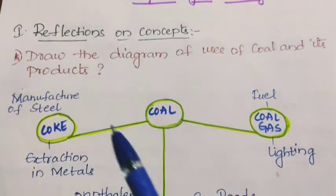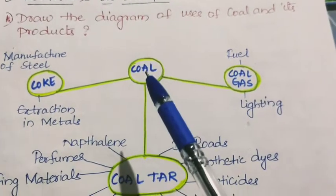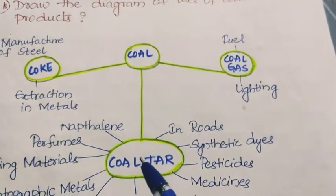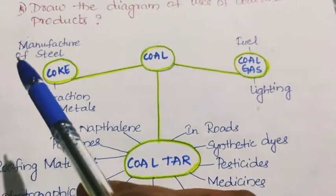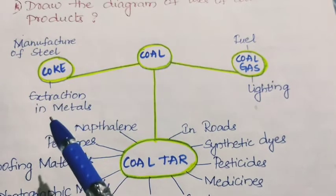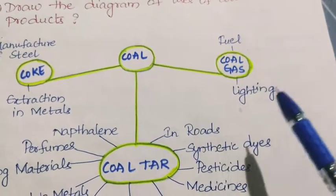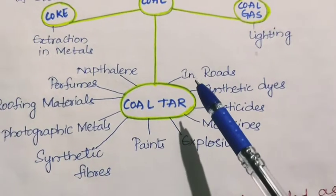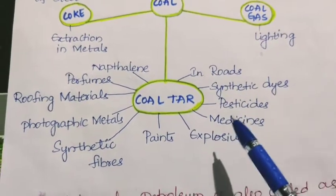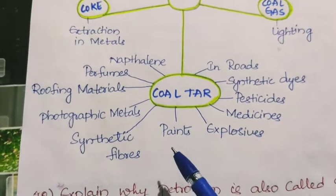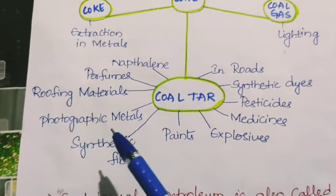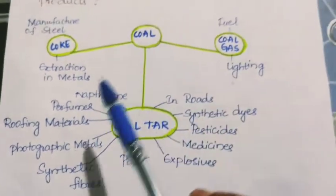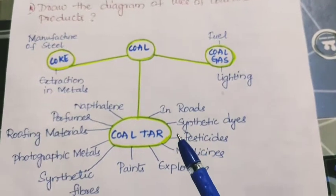Coal and its products: coal occurs as coke, coal gas, and coal tar. Coke is helpful in the manufacture of steel, that is extraction of metals. Coal gas is a fuel used for lighting. Coal tar is useful in making roads, synthetic dyes, pesticides, medicines, explosives, paints, synthetic fibers, photographic materials, roofing materials, and perfumes.